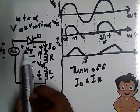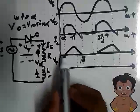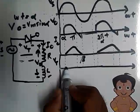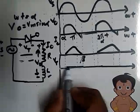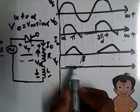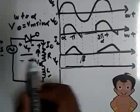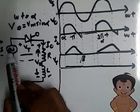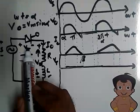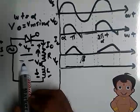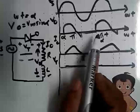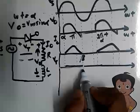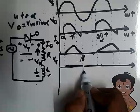Now we have to obtain the waveform of Vt. From α to β we know this thyristor is conducting, so the thyristor acts as a short circuit and the voltage across it will be zero. When it is in open-circuit condition — that is, from β to the next 2π + α — the supply voltage entirely appears across the thyristor. From β to the next 2π + α, the voltage across the thyristor follows the source voltage.